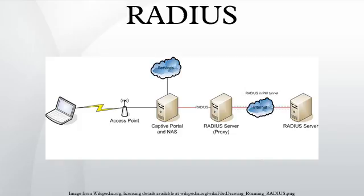Finally, when the user's network access is closed, the NAS issues a final accounting stop record to the RADIUS server, providing information on the final usage in terms of time, packets transferred, data transferred, reason for disconnect and other information related to the user's network access. Typically, the client sends accounting request packets until it receives an accounting response acknowledgement, using some retry interval. The primary purpose of this data is that the user can be billed accordingly. The data is also commonly used for statistical purposes and for general network monitoring.